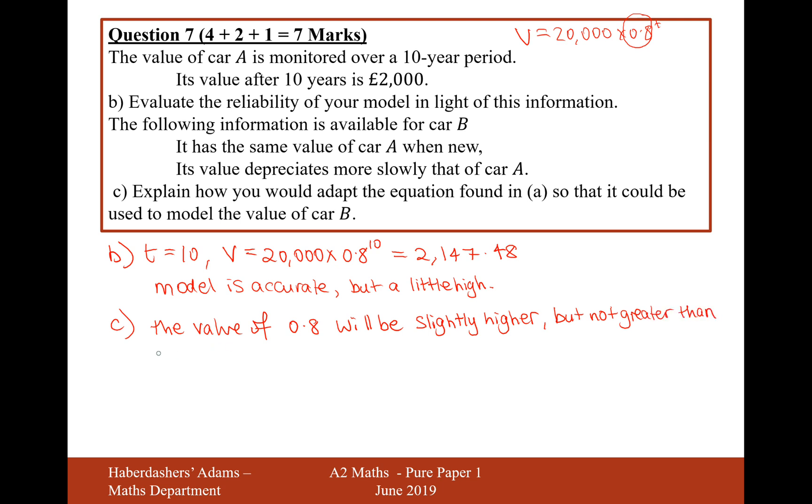But not greater than or equal to 1, because when it's greater than or equal to 1, it's going to appreciate. So the model for car B, VB, is going to equal 20,000 times B to the power of T.